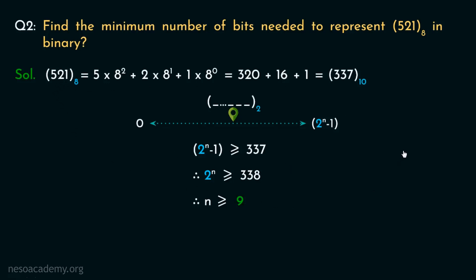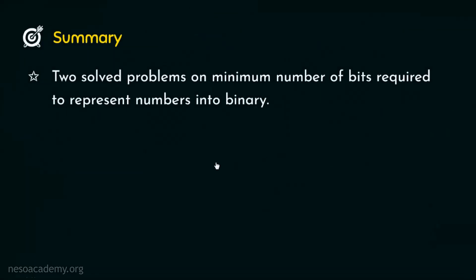And if your target number system is something other than binary, all you have to do is use the base of that number system in place of 2. So in this session, we observed two solved problems on minimum number of bits required to represent numbers of different number systems into binary. I hope the explained concepts and the solved problems were clear to you. In the upcoming sessions, we will observe some more interesting numerical problems. Thank you all for watching.